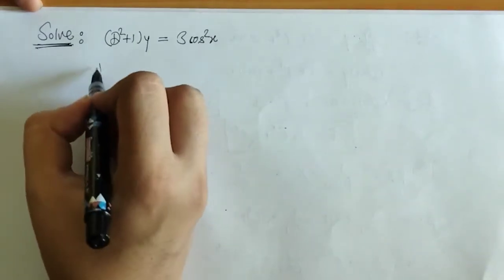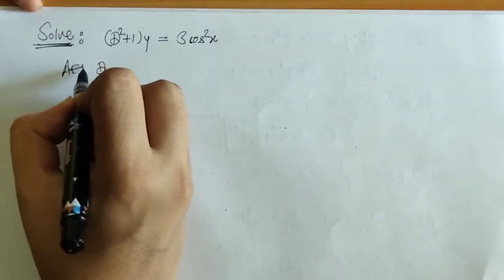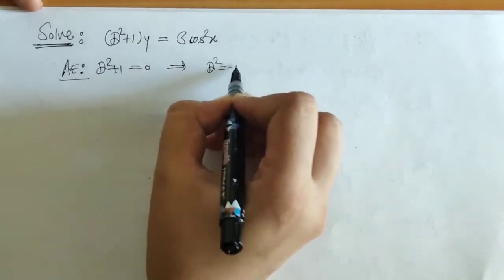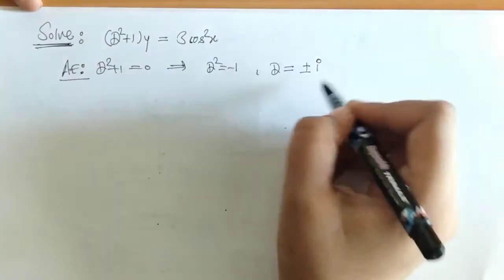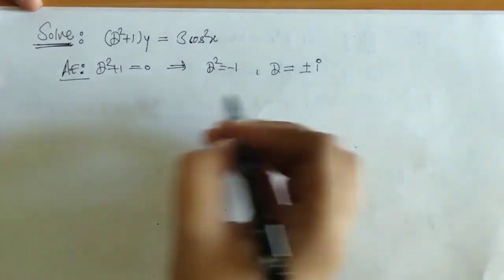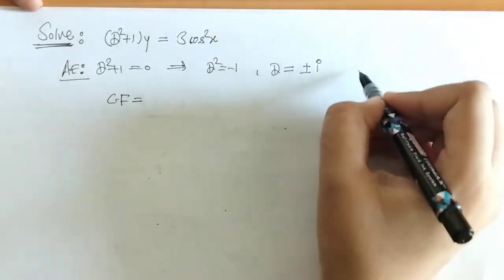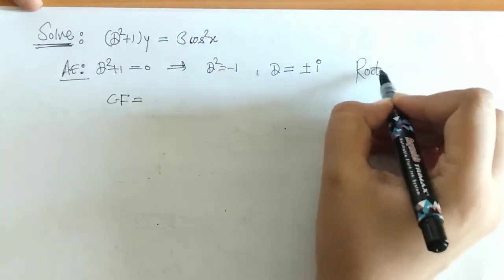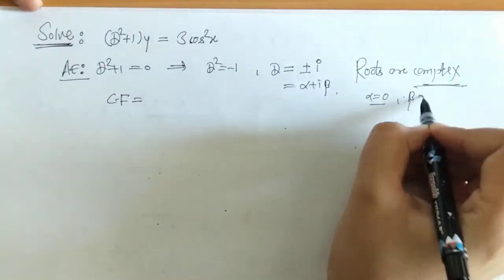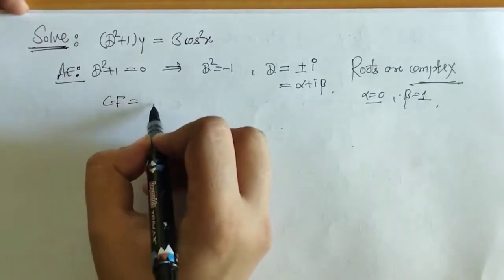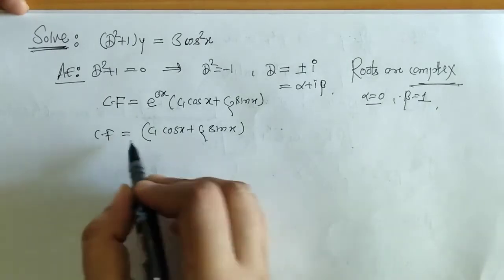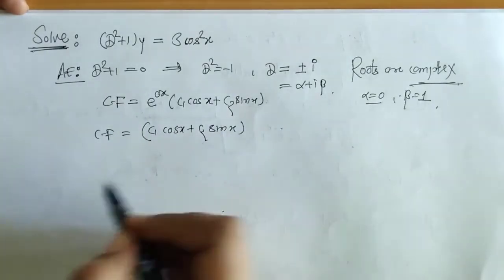First we write down the auxiliary equation and solve it. We obtain the roots, which are complex. So the complementary function (CF) is written using the complex roots formula. This is the CF for the given differential equation.